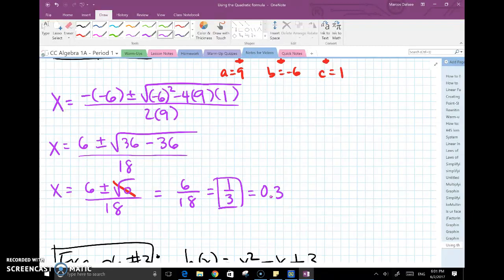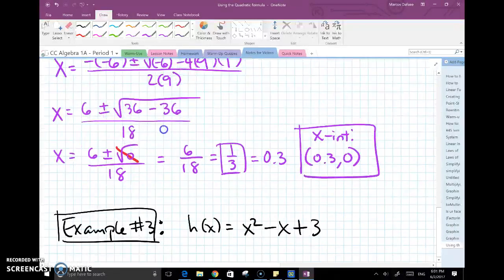So all I have to do is reduce this, and this would become 1 third or 0.3. So that would be my single solution, my one solution. In other words, I have only one x-intercept and it would be located at 0.3 and 0.